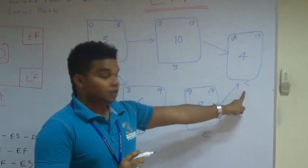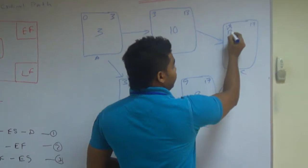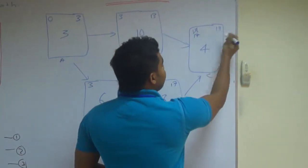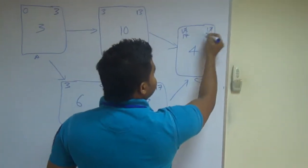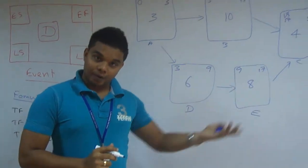So we will change this. That is we can't start event C at thirteenth but of course we can start it at seventeen. Then our earliest finishing for C will be twenty-first. Right. Now we have done the forward path. Now we will do the backward passing method.